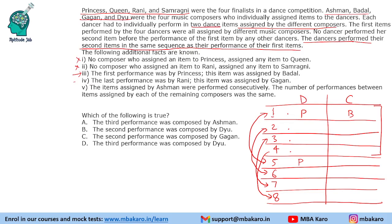The last performance was by Rani and this was assigned by Gagan, so Rani by Gagan. Since Rani is eighth, Rani will be fourth also. The items assigned by Ashman were performed consecutively. If we put Ashman in the first set, we cannot have Ashman again there because these 4 are different. So logically, Ashman should be last in the first set and first in the second set — the only possibility is Ashman taking the fourth and the fifth performances.